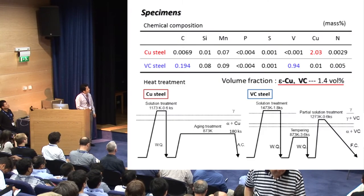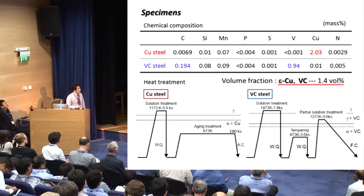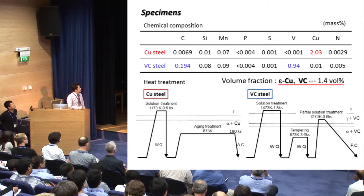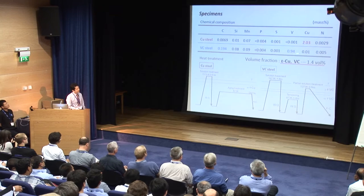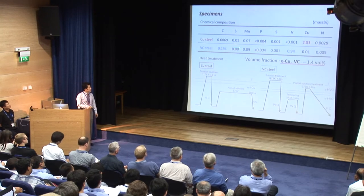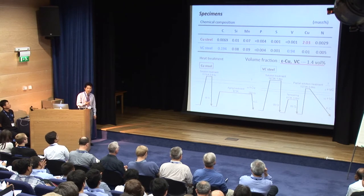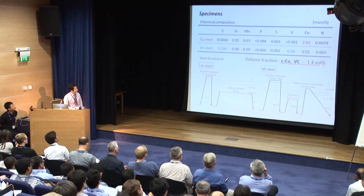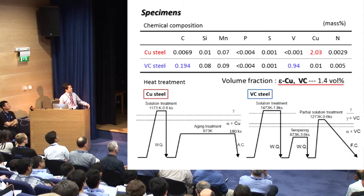Let me explain the detail of the specimen. We mainly used an iron 2% copper ferritic steel. In addition, as a hard carbide dispersion steel, we used a V-C steel — that is iron, 0.2% carbon, 0.9% vanadium. The chemical compositions of these steels were controlled to form the same amount of precipitates: 1.4% of epsilon copper and V-C carbide should be precipitated in these materials, respectively.